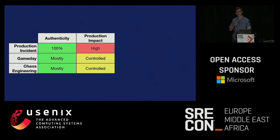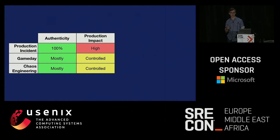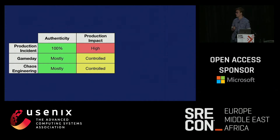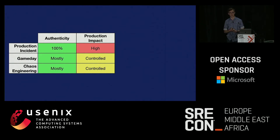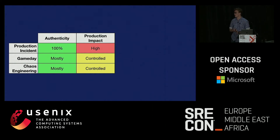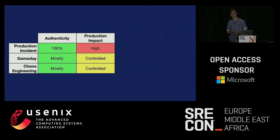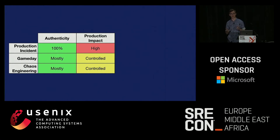With authenticity tends to come production impact — when you have something highly authentic, you'll also have high production impact. That's why you don't want production incidents as your main form of resiliency reasoning, because you're also bothering your customers. The big advantage of game days and chaos engineering is that they're controlled, so you can write software to control when failures happen and hopefully recover more quickly.